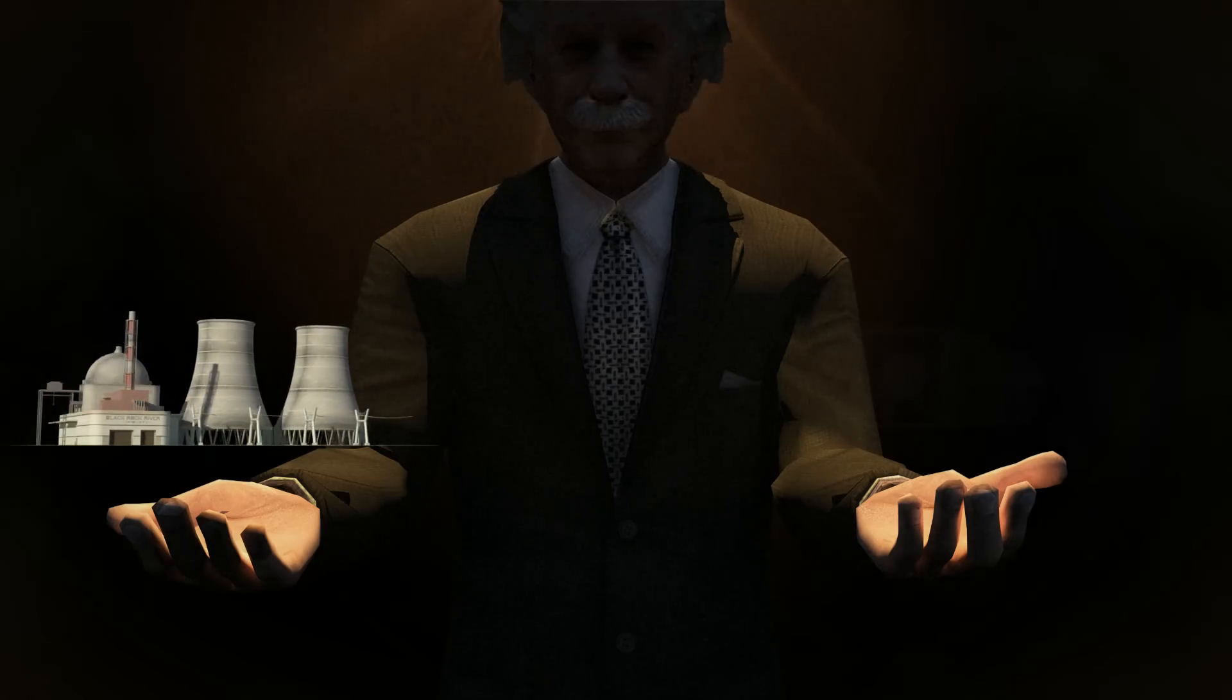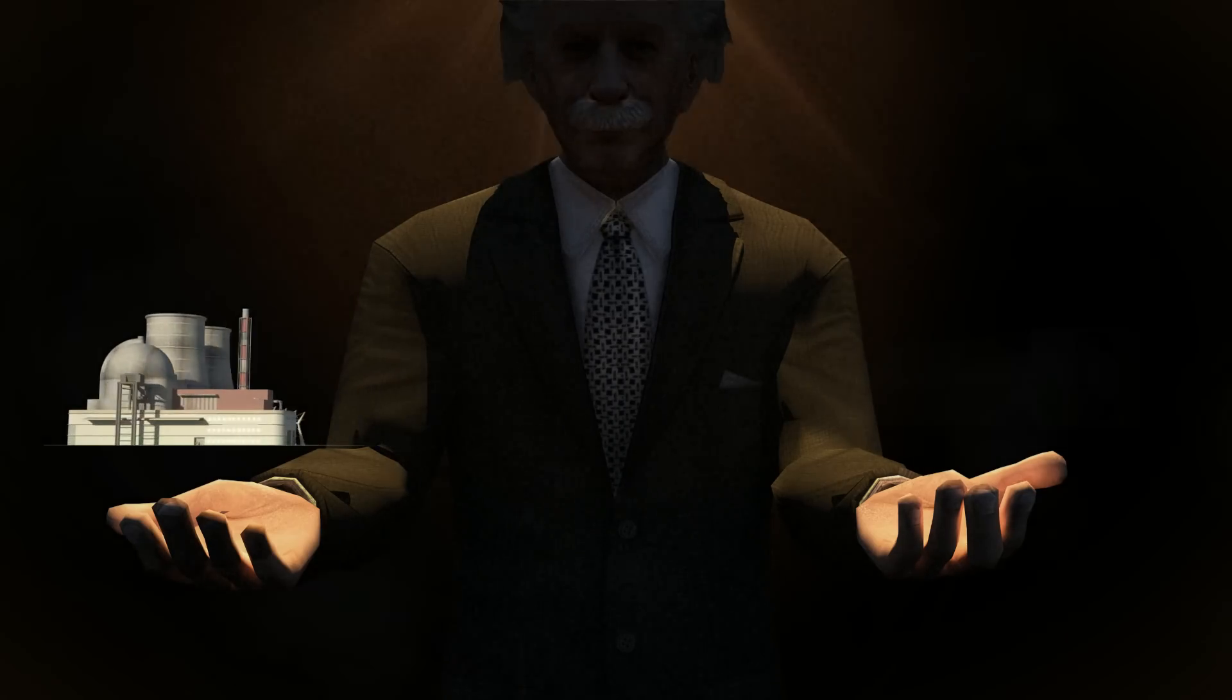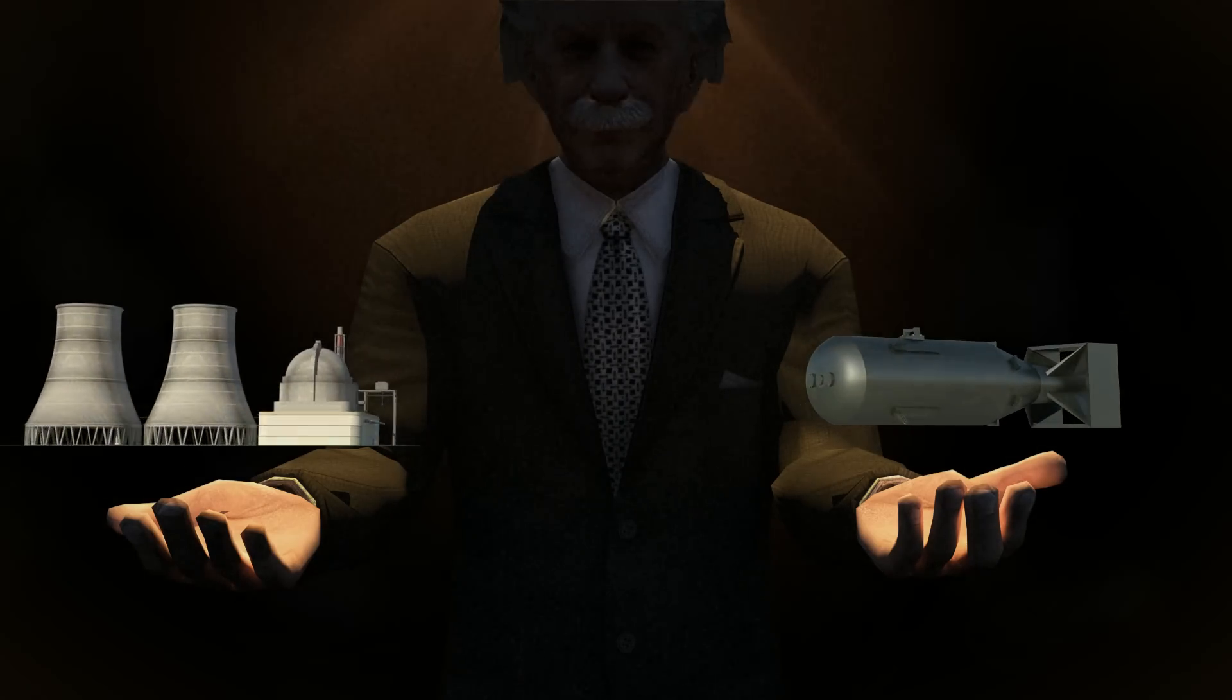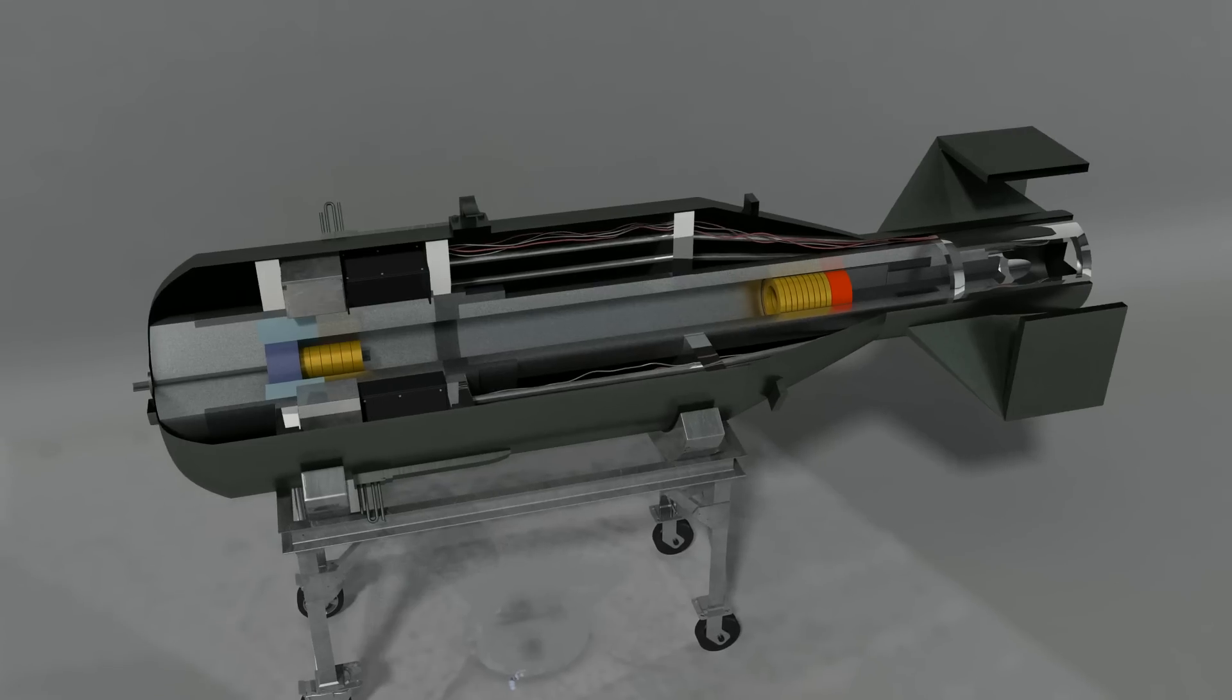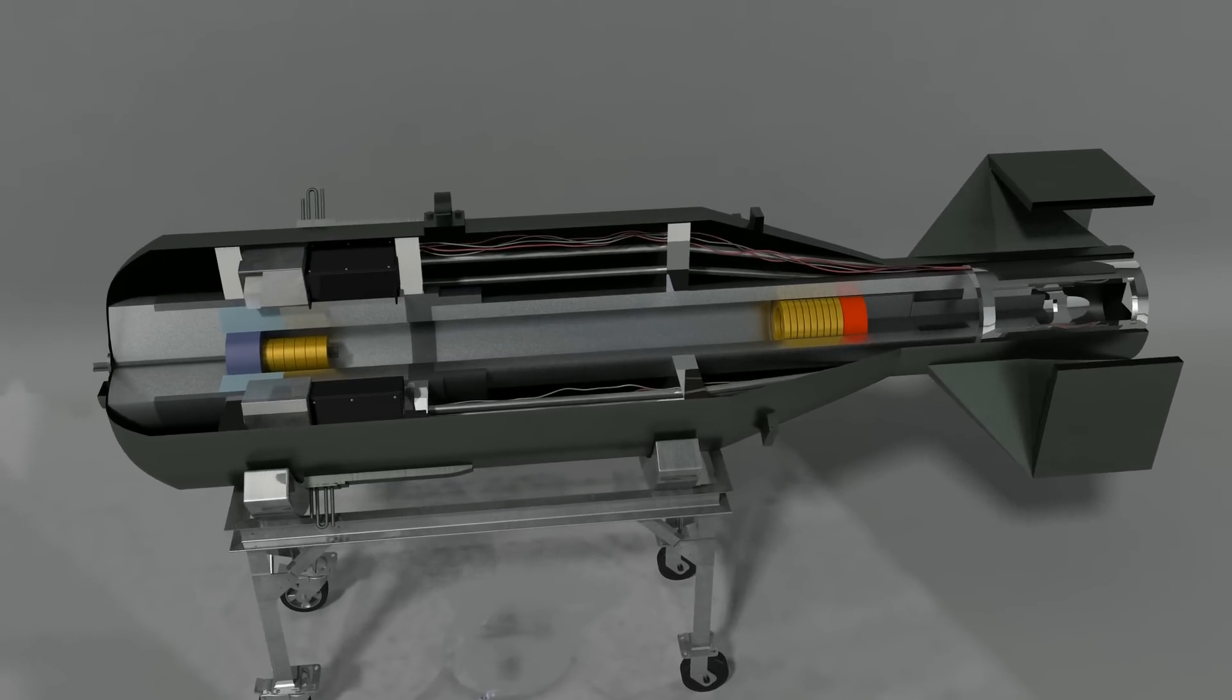Low-enriched uranium is used for nuclear energy generation and high-enriched uranium is used to create nuclear bombs. Now, let's find out how uranium is used in nuclear bombs.